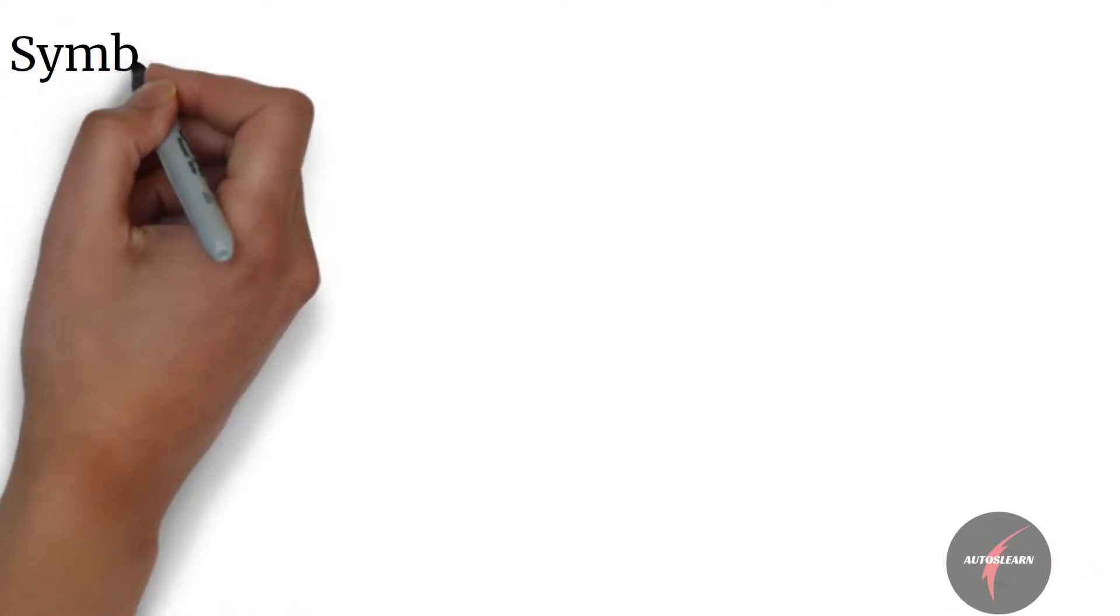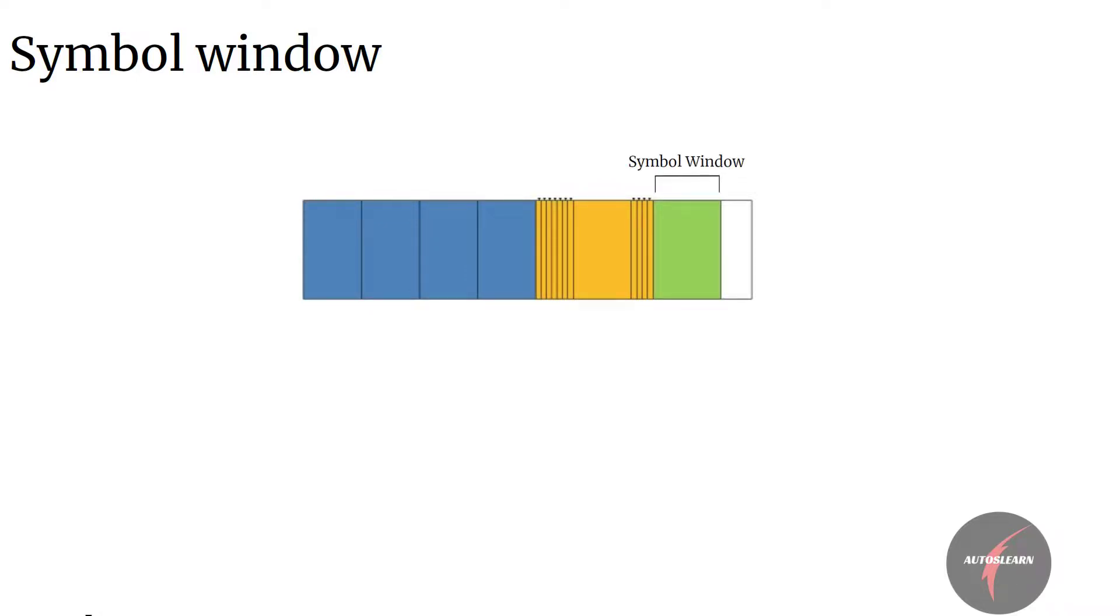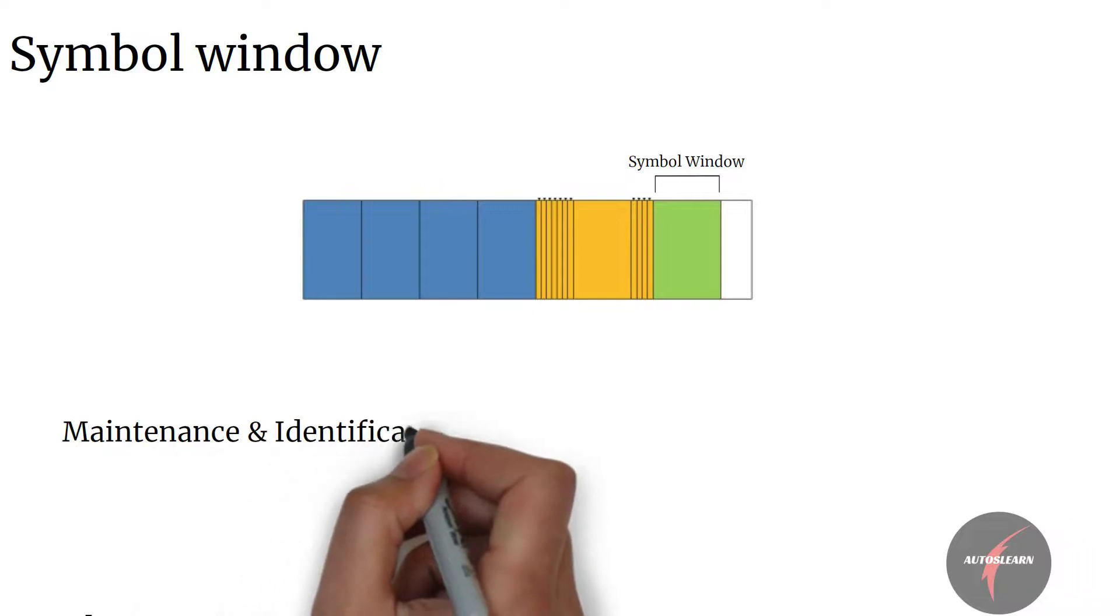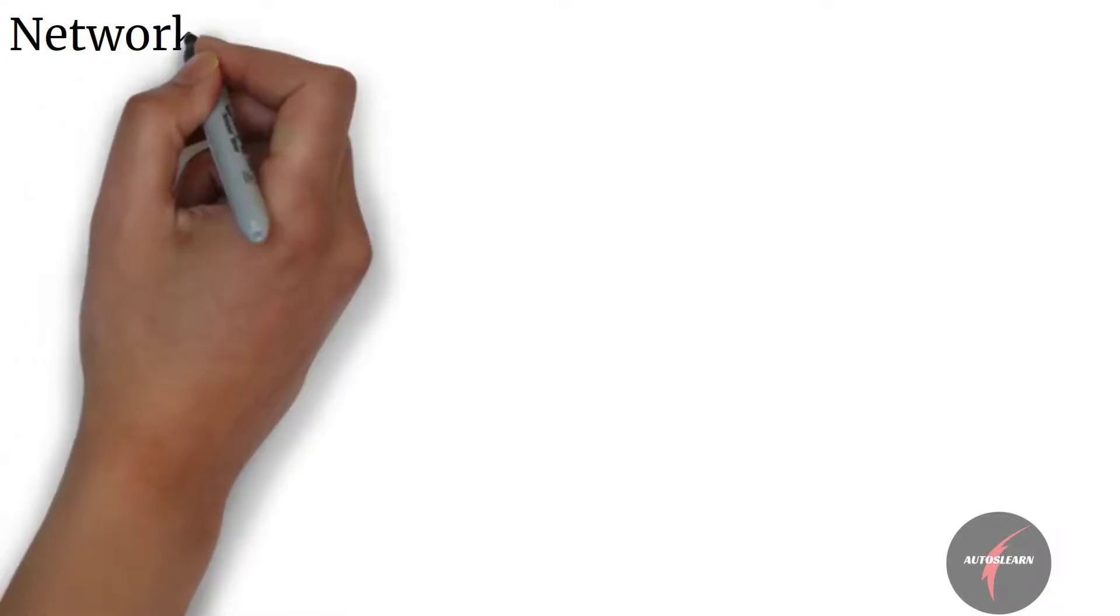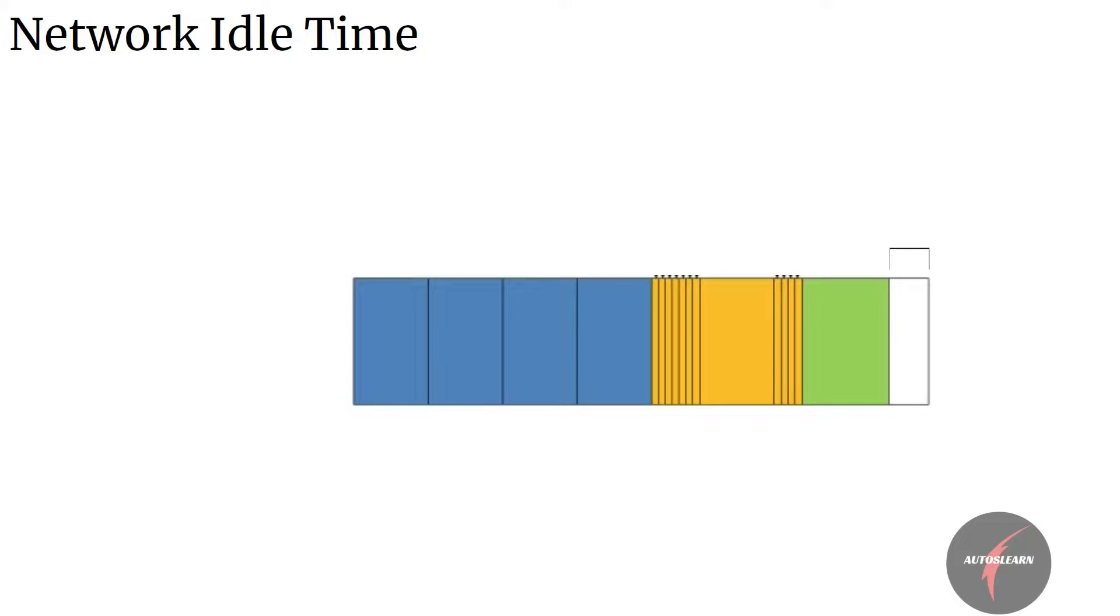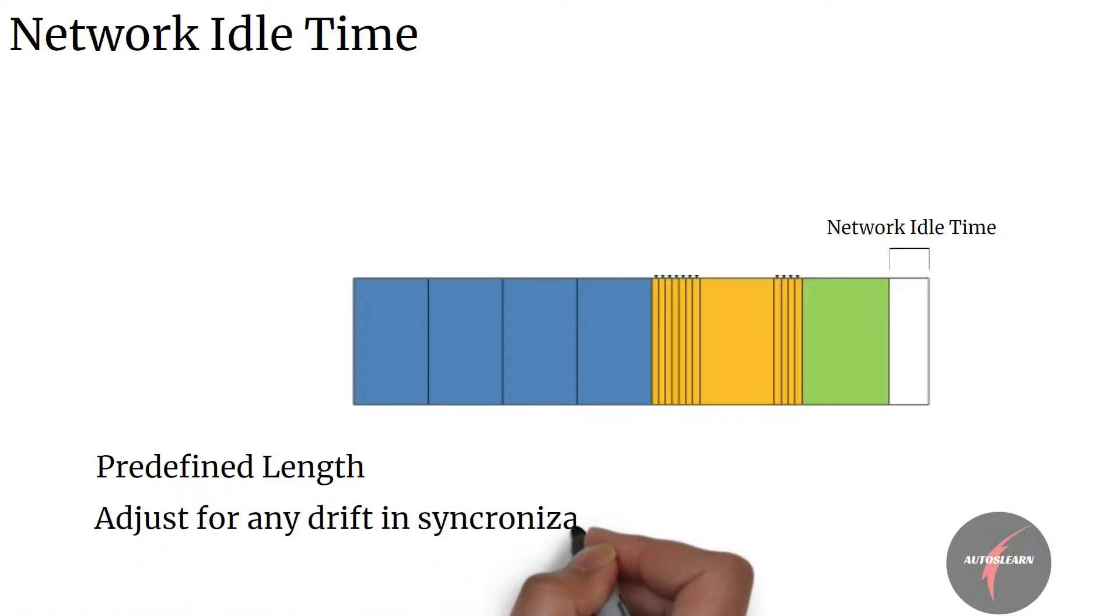Coming back to segments of the communication cycle, let's look into the symbol window and network idle time. The symbol window is primarily used for maintenance and identification of special cycles such as cold start cycle. Most high-level applications do not interact with this symbol window. The network idle time is of a predefined known length by ECUs. The ECUs make use of this idle time to make adjustments for any drift that may have occurred during the previous cycle.